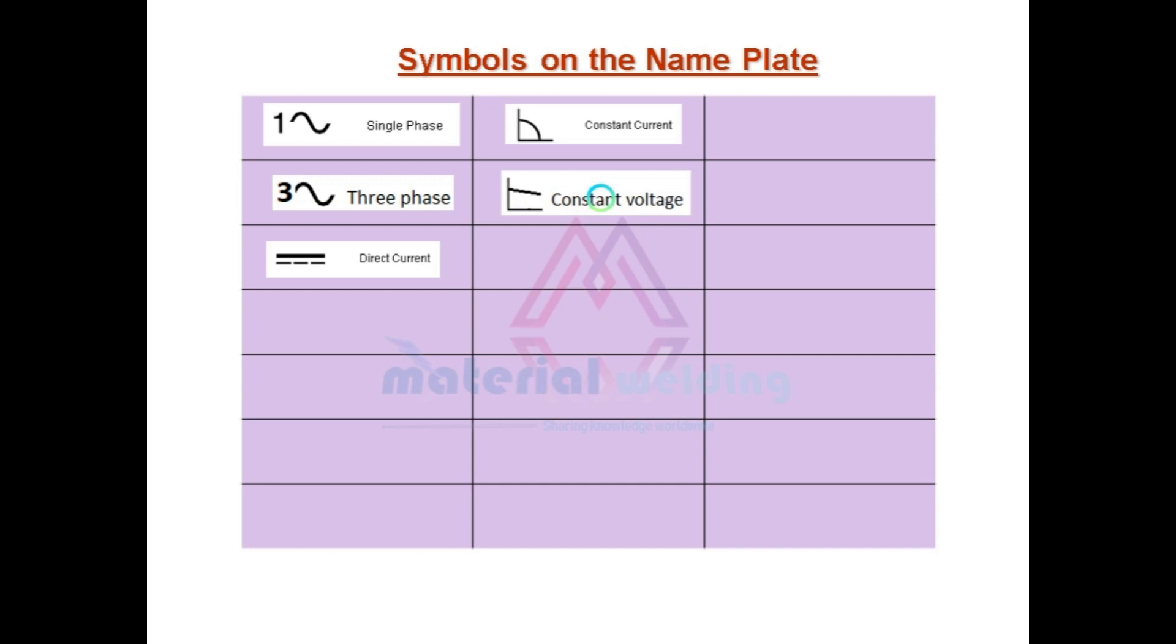This is for constant voltage and we will find them on GMAW, FCAW, and SAW type welding machines. As we know, it is also called flat characteristic. The X area is for duty cycle. You can learn what is duty cycle and how it works and how to calculate in our video on welding machines in detail. This symbol is for the frequency.